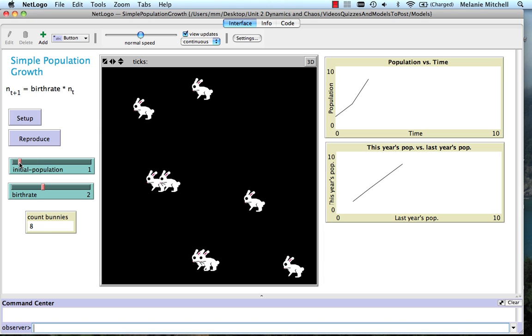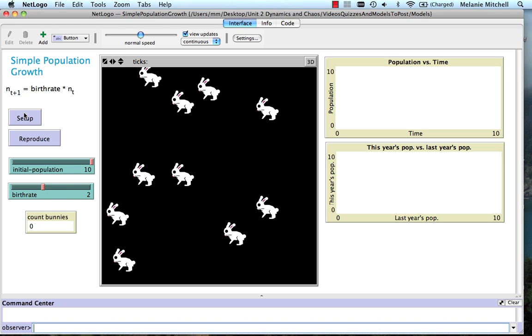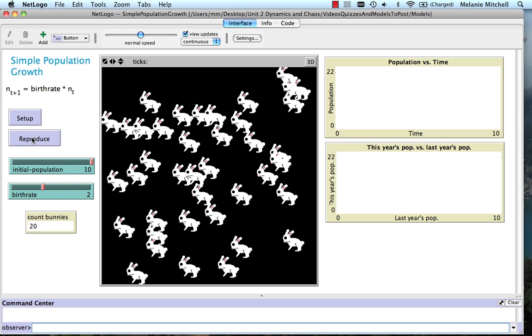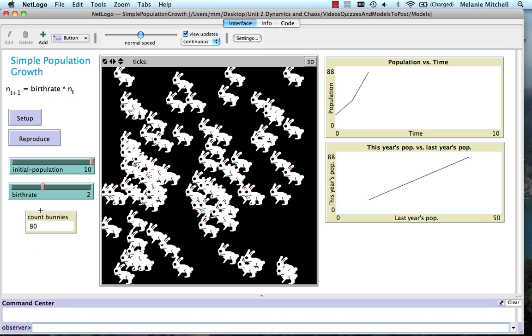Now, let's set our initial population to 10, that is 10 times the original. Set up, reproduce 1, 2, 3, and we end up with 80 bunnies, 10 times the original.